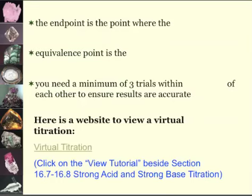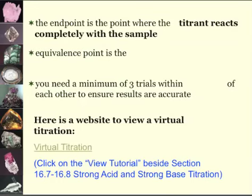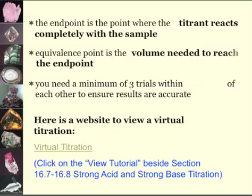The endpoint is where the titrant reacts completely with the sample. And the equivalence point is the volume needed to reach the endpoint. You need a minimum of three trials within 0.20 milliliters of each other to ensure results are accurate.